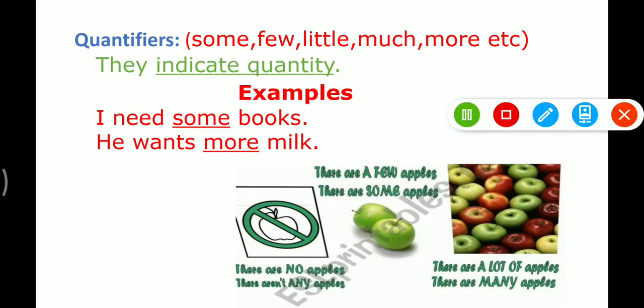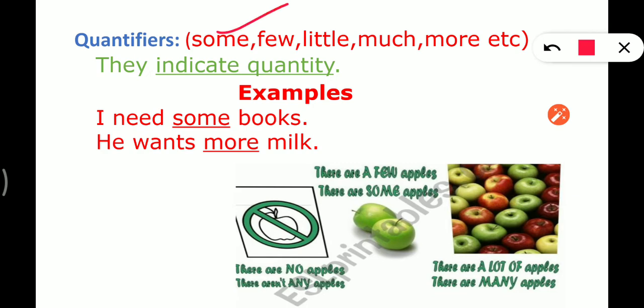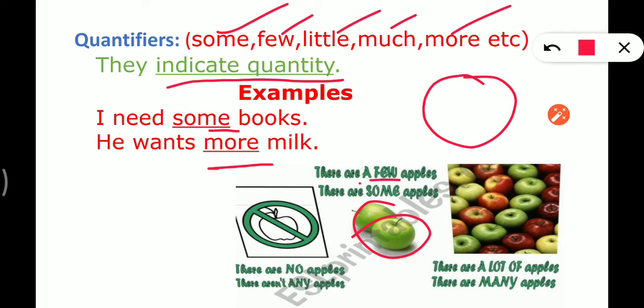Let's move to the next one. Now they are quantifiers. Quantifiers are some, few, little, much, more, etc., and they indicate quantity, the quantity of noun in a sentence. Now look at the examples. I need some books. He wants more milk. And the example I have put here. There are a few apples, or there are some apples. There are a lot of apples, there are many apples. There are no apples, there aren't any apples. I hope it is clear to you. In next lecture, we'll know more about them.